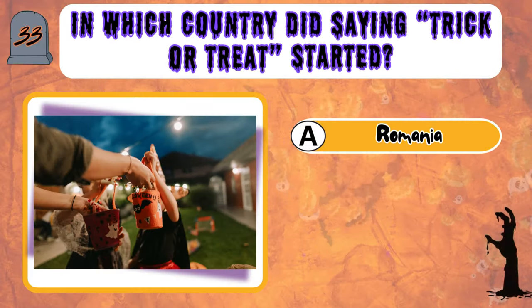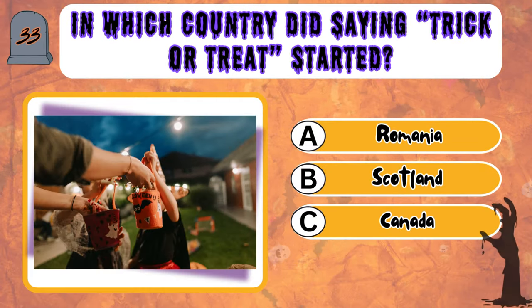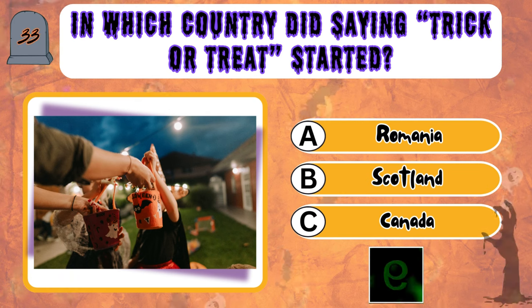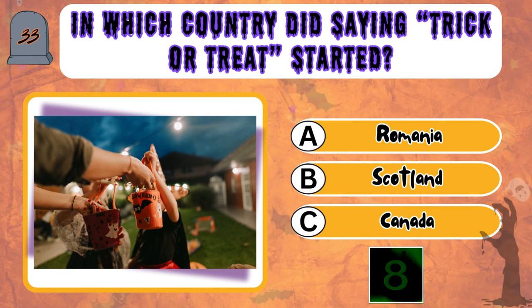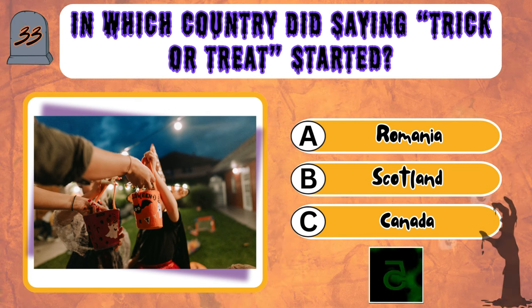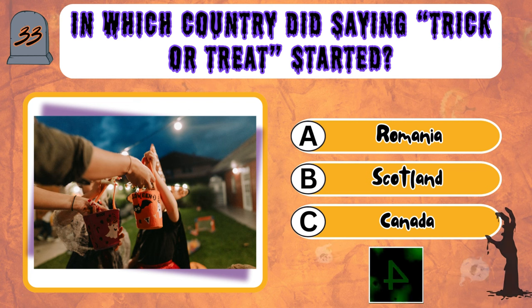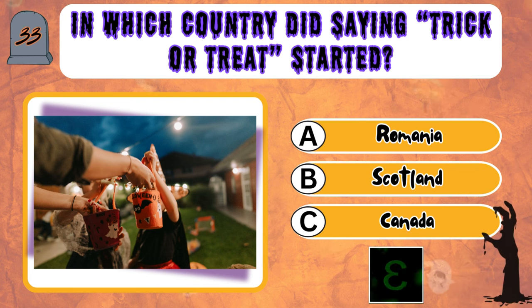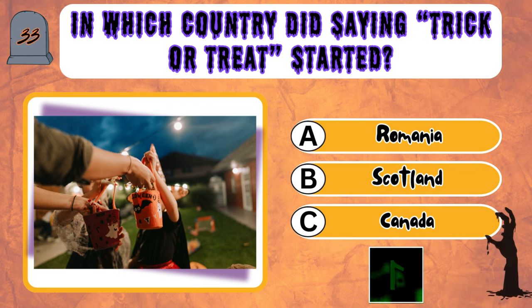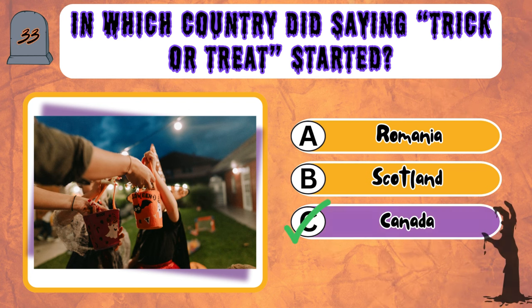In which country did saying trick-or-treat start? A, Romania. B, Scotland. C, Canada. It's C, Canada.